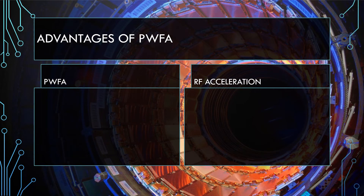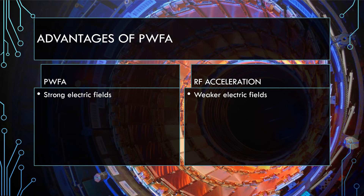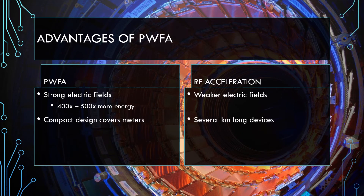Plasma wakefield acceleration has some significant advantages over radiofrequency acceleration. First, the electric fields generated within a plasma can be several orders of magnitude stronger than the fields produced by an RF accelerating cavity, because the strength of an electric field within a plasma is limited by mechanical properties rather than dielectric breakdown. This results in electrons being boosted to energies 400 to 500 times greater than what they would gain inside an RF accelerator over the same length, allowing plasma wakefield accelerators to be much more compact — covering mere meters as opposed to kilometers.